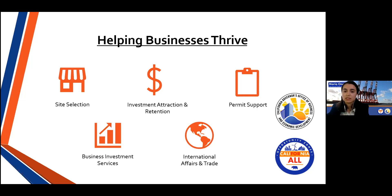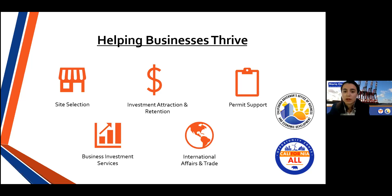We've put together a checklist to help navigate the first steps to getting started in our state, including how to register with the California Secretary of State, how to open a U.S. bank account, and first permitting steps. Our services include permitting support, a free and confidential site selection service, and direct connection with local partners. We can also walk businesses through the incentives they may be eligible for — including tax credits, workforce training dollars, and utility incentives.